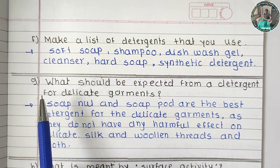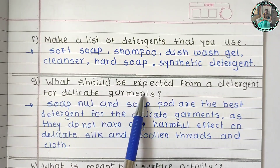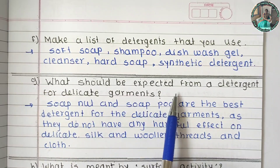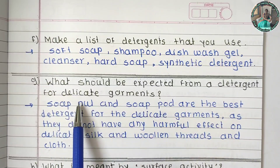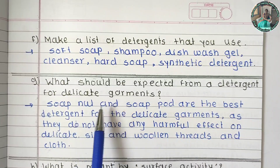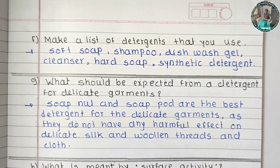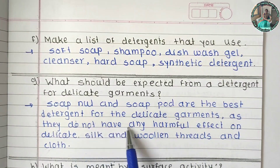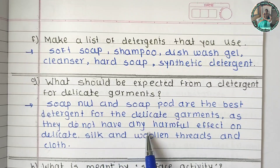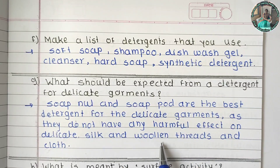What should be expected from a detergent for a delicate garment? Soap nut and soap pod are the best detergents for delicate garments, as they do not have any harmful effect on delicate silk and woolen threads and clothes.